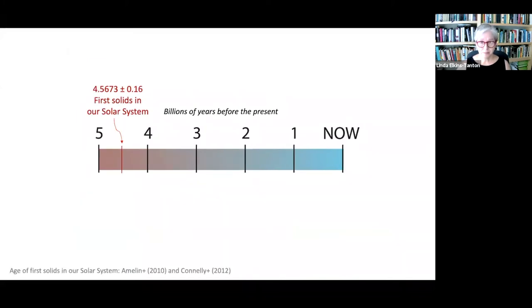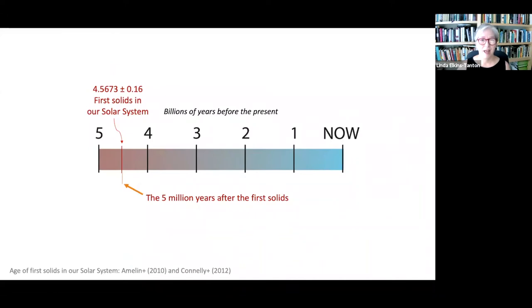Here's the timeline we are looking at today — the same basic timeline I'll show in every lecture. Today we're going to look at that tiny stripe: the first five million years after the first solids. Starting from just dust and gas, how are the whole range of rocky, gas-rich, and icy planets built? And what parts of this process do we have good evidence for and what is still poorly understood?